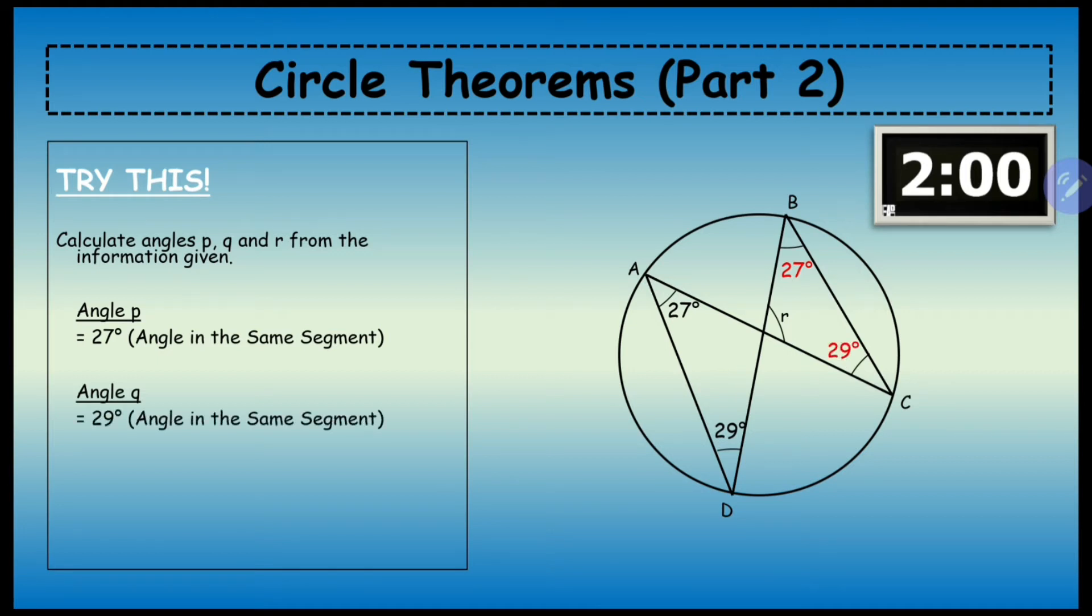Now to work out r, we've got a triangle here which is 27° and 29°, and the missing angle is going to be the remaining part that's added to make 180°. That's going to be 124°.